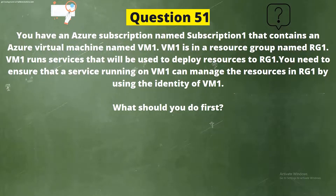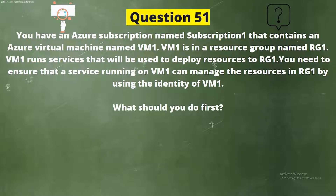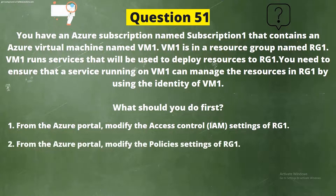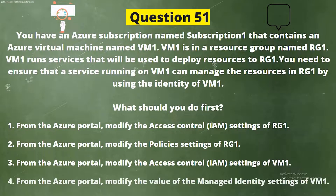Next question. You have an Azure subscription named Subscription 1 that contains an Azure virtual machine named VM1. VM1 is in a resource group named RG1. VM1 runs services that will be used to deploy resources to RG1. You need to ensure that a service running on VM1 can manage the resources in RG1 by using the identity of VM1. What should you do first? The options are: Option 1, from the Azure portal, modify the access control settings of RG1; Option 2, from the Azure portal, modify the policy settings of RG1; Option 3, from the Azure portal, modify the access control settings of VM1; Option 4, from the Azure portal, modify the managed identity settings of VM1.